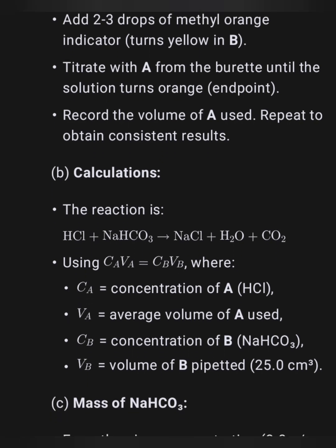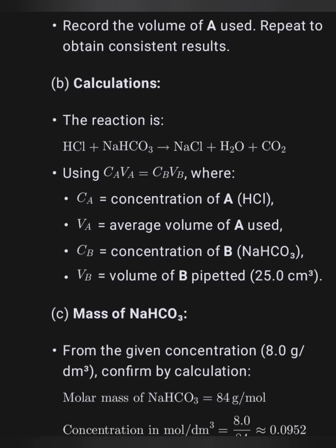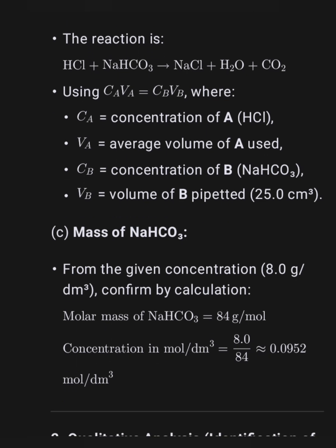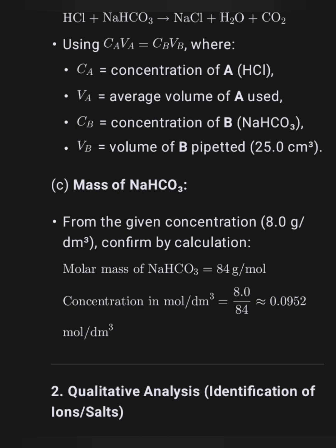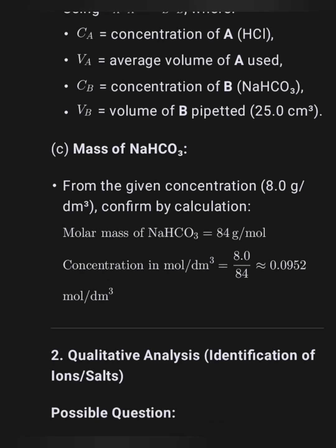For the calculation, the reaction is: NaHCO₃ + HCl → NaCl + H₂O + CO₂. You use this formula to calculate the required details. For the mass of sodium hydrogen carbonate from the given solution: 8.0 g/dm³ confirmed by calculation. Molar mass of NaHCO₃ = 84 g/mol; concentration in mol/dm³ = 8.0 ÷ 84.